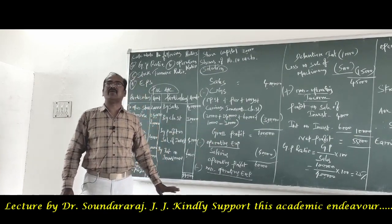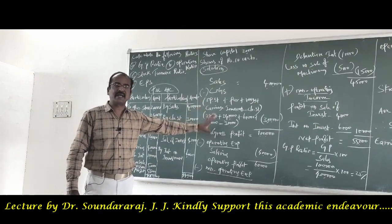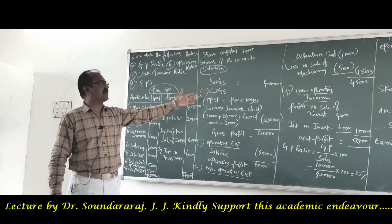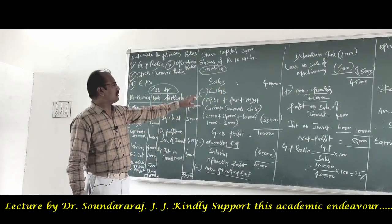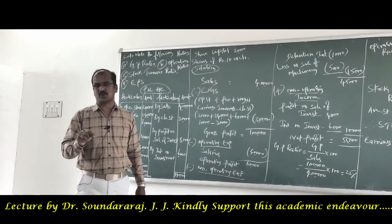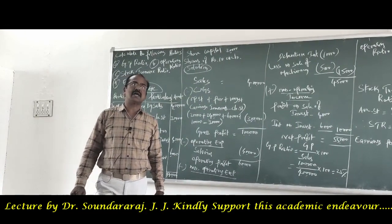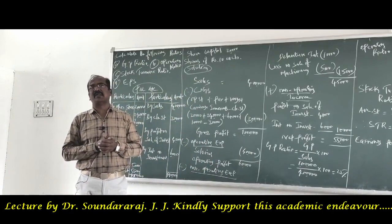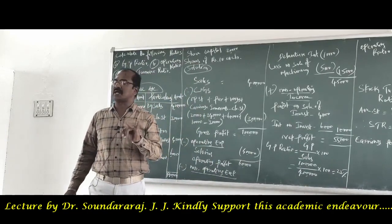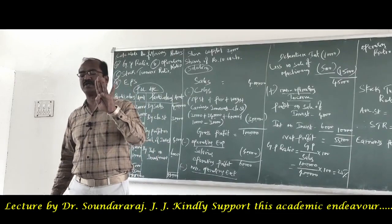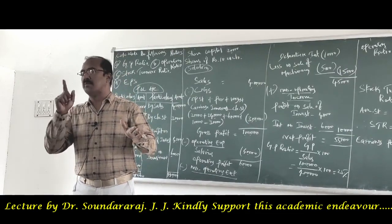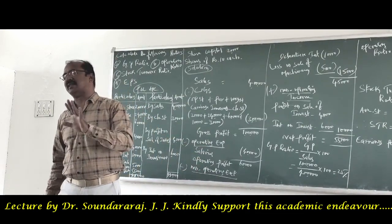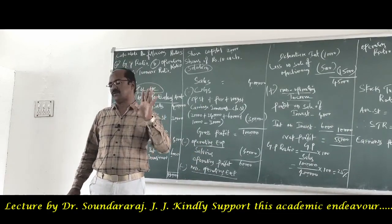Let us look at the way I have rearranged the data from the problem. I have taken sales first, amounting to 4 lakh rupees. Then I have subtracted cost of goods sold. Cost of goods sold is calculated with the formula: opening stock plus purchases plus carriage inwards plus wages plus direct expenses minus closing stock. Whatever is available in the problem is chosen and applied in the formula.